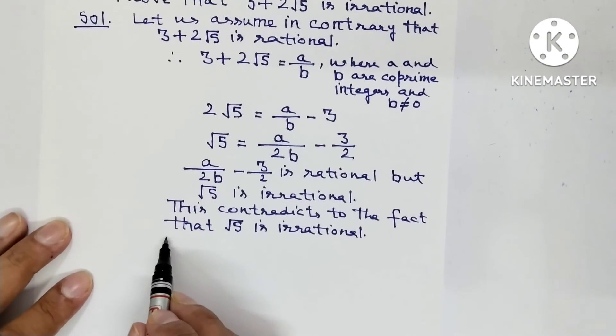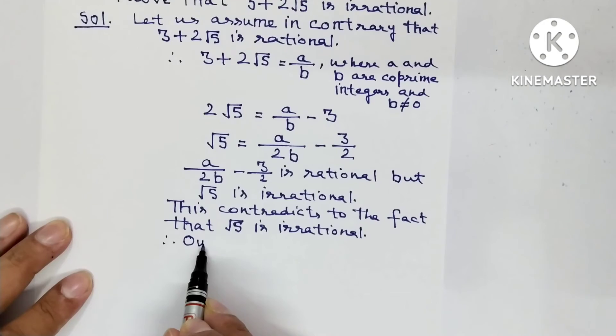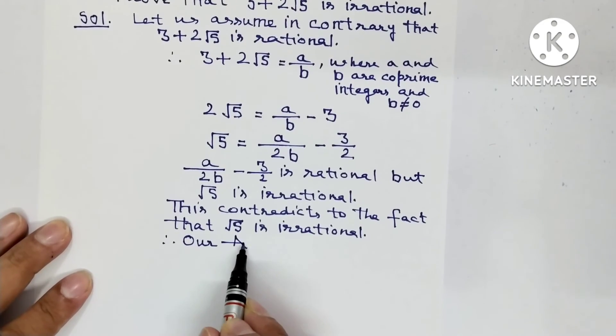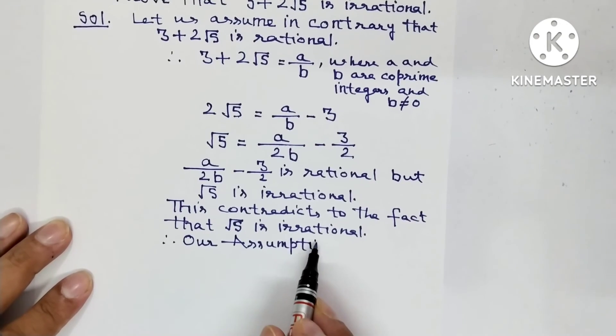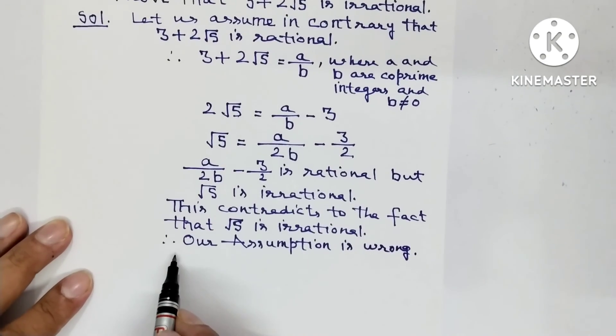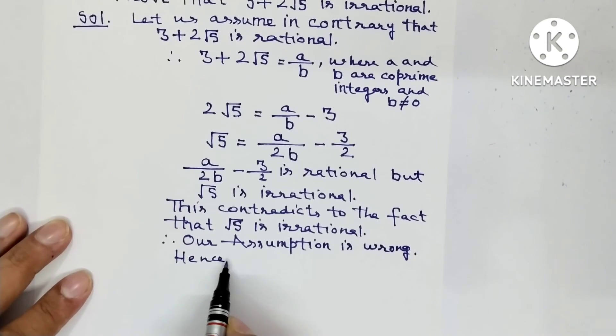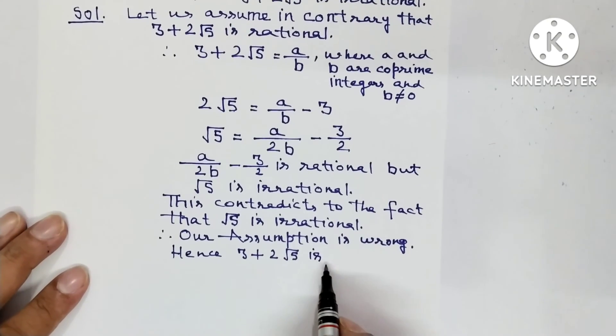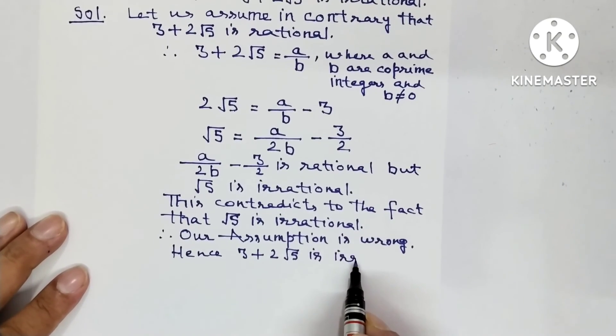Therefore our assumption is wrong. Hence, 3 plus 2 under root 5 is irrational.